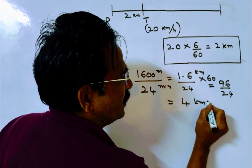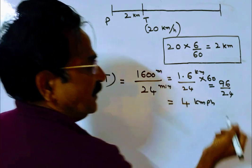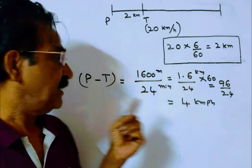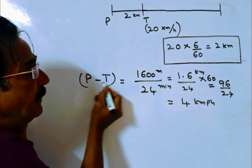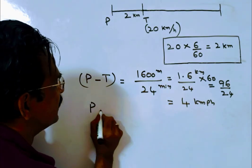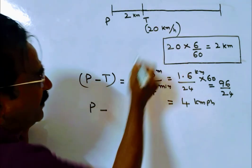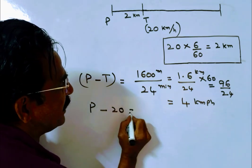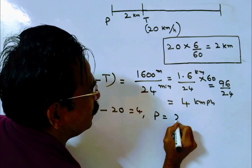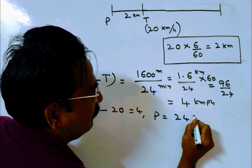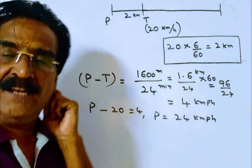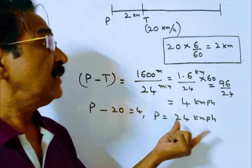So the relative velocity is equal to 4 km/h. Therefore, P minus T equals 4. Since the thief's speed is 20 km/h, police velocity P equals 24 km/h. This is the velocity of the police.